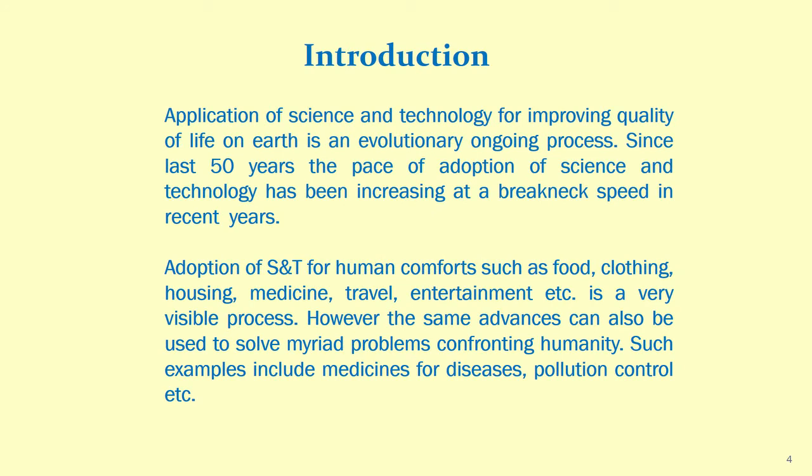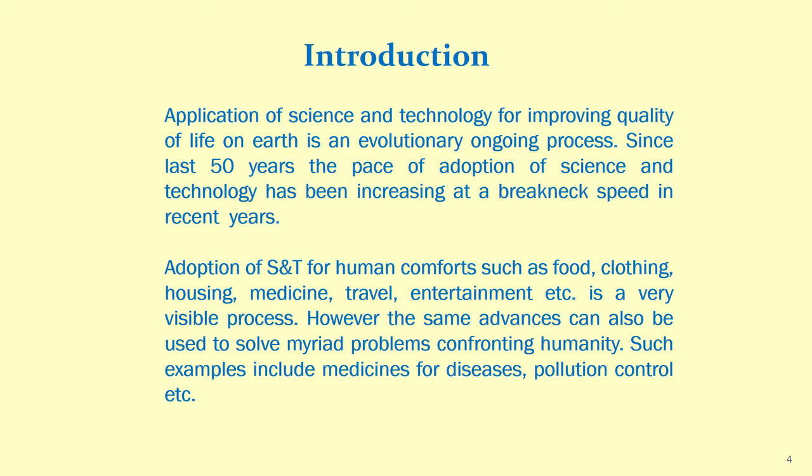Module one begins with an introduction: application of science and technology is an ongoing process for improving the quality of life on earth. It is an evolutionary, ongoing process, and since the last 50 years the pace of adoption of science and technology has been increasing at a breakneck speed, especially in recent years. What is being taught today may become obsolete within the next 3 to 5 years, so we have to be adaptive to changes and advances.